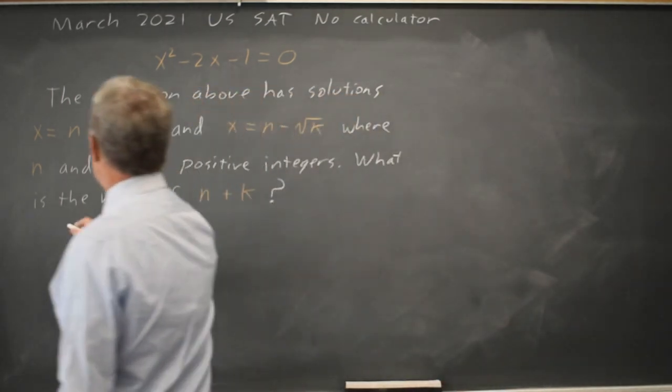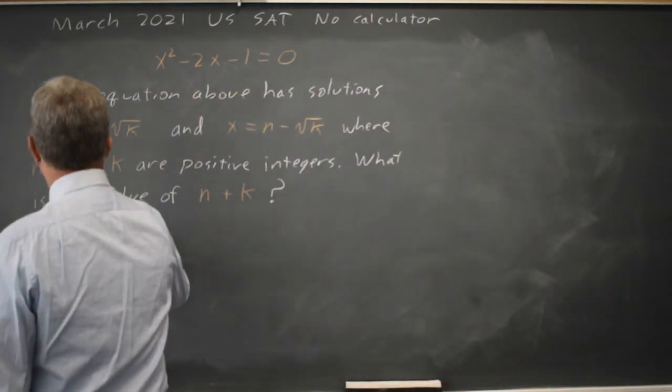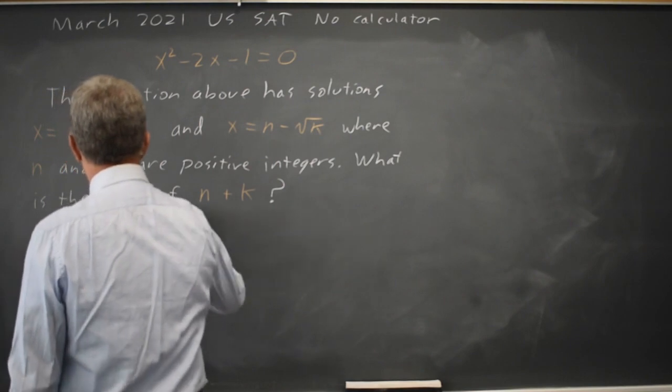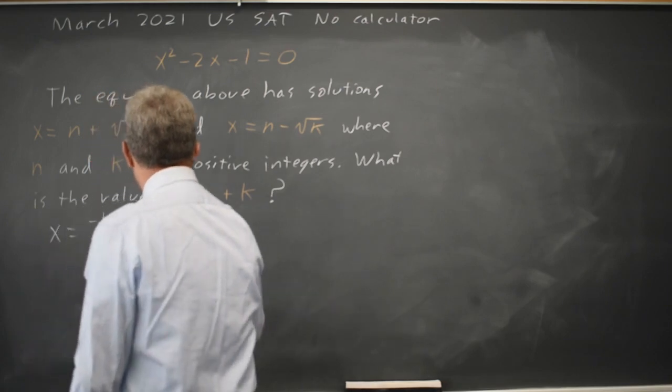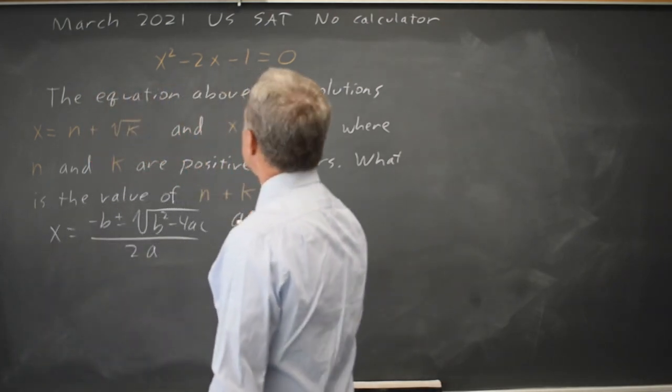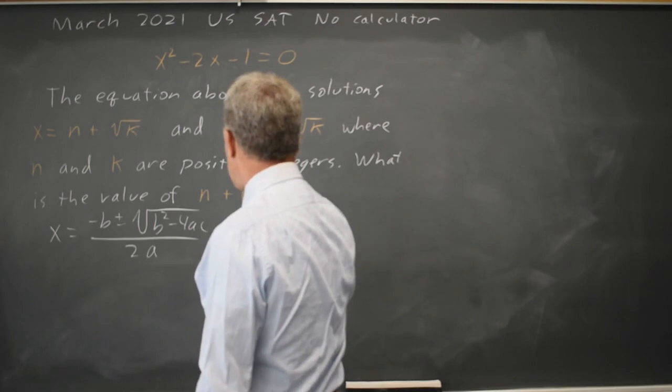Let's try that. X equals negative B plus or minus square root B squared minus 4AC all over 2A, where A is the quadratic coefficient.